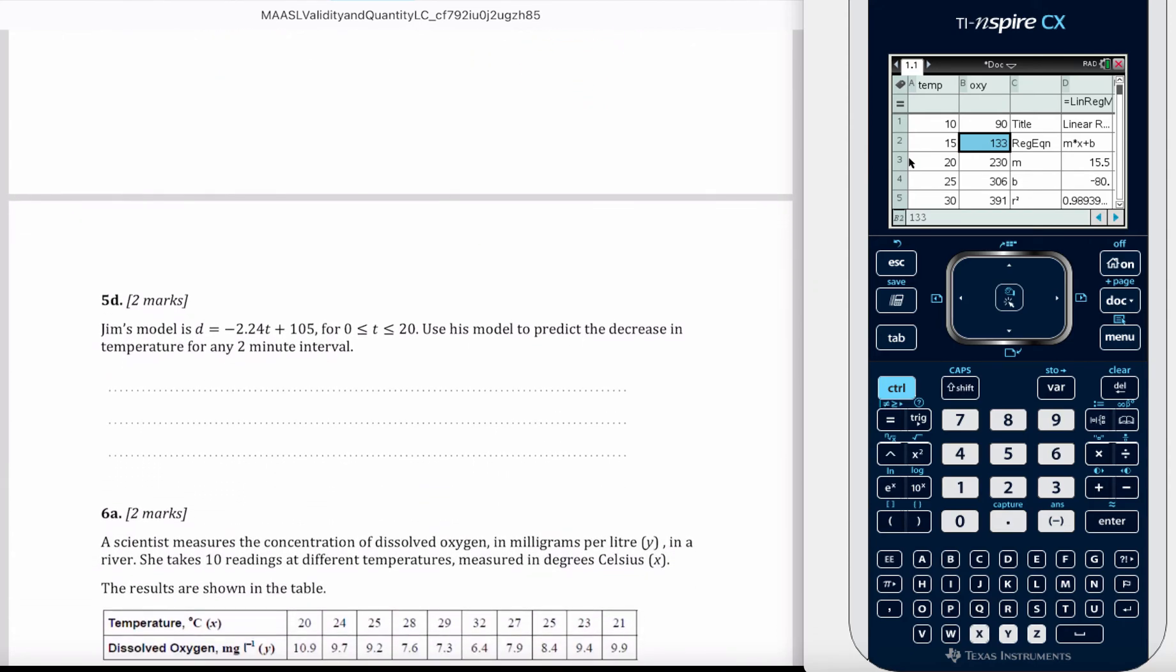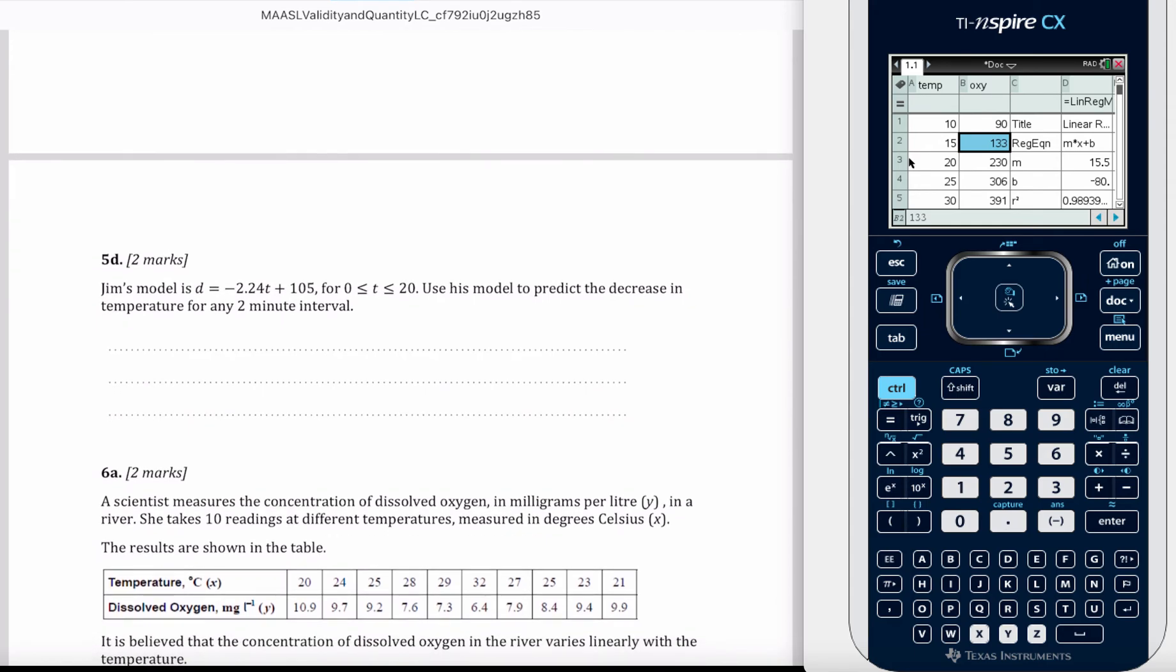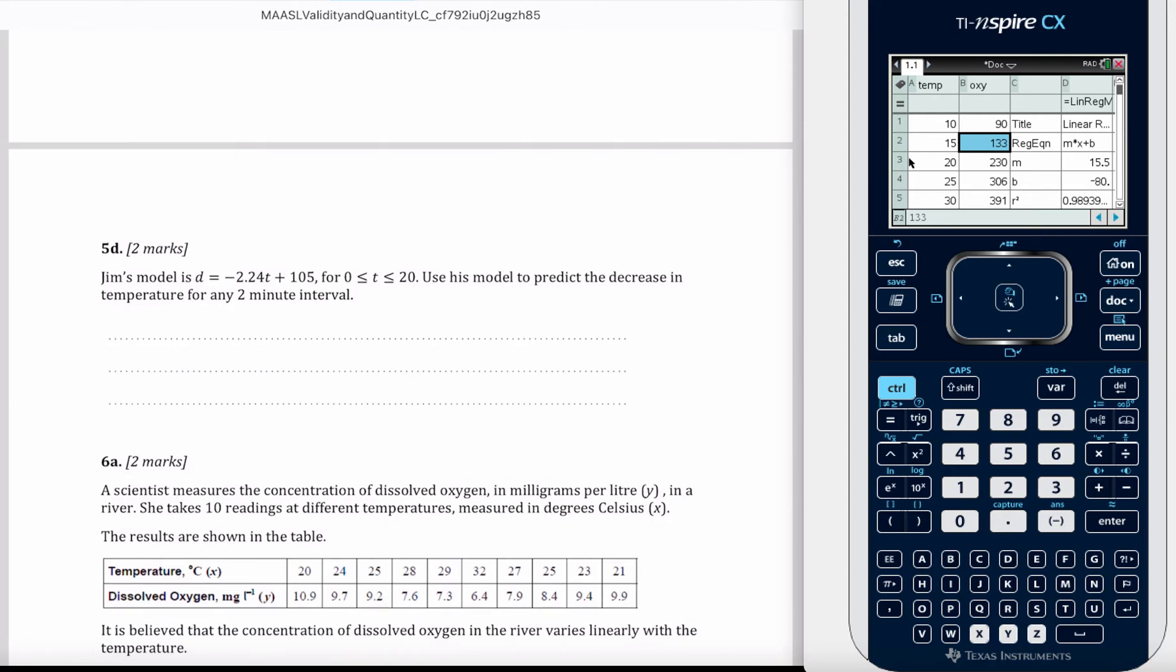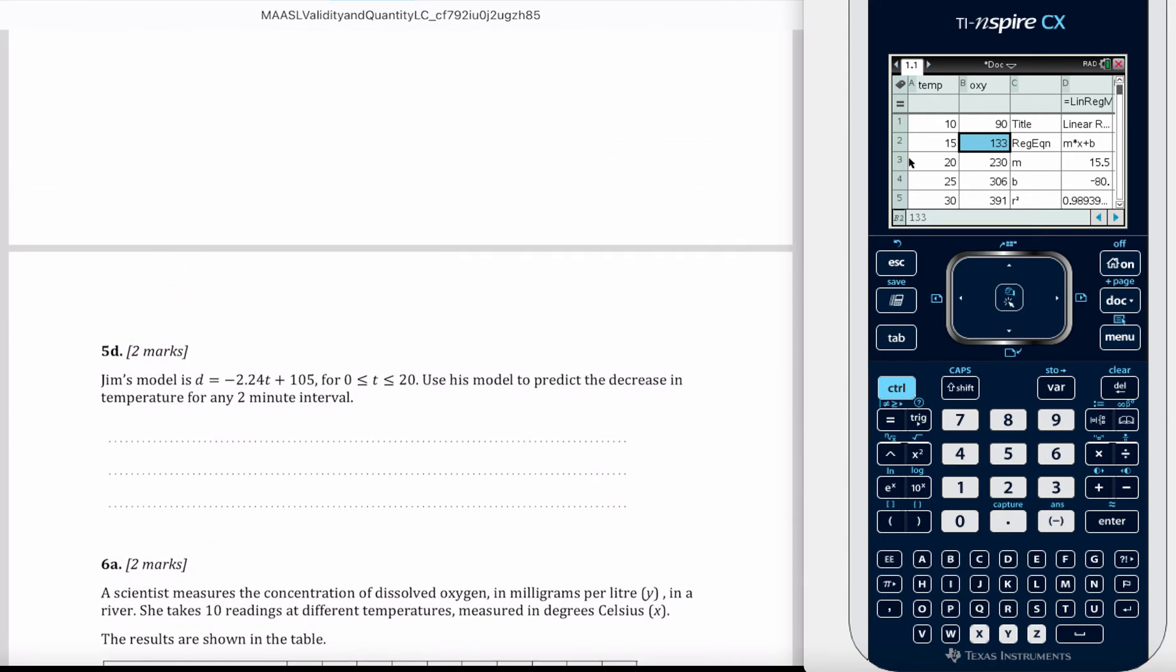Jim's model is D equals negative 2.24T plus 105 for the domain 0 to 20. He uses this model to predict the decrease in temperature for any 2-minute interval. We already know the temperature is decreasing.